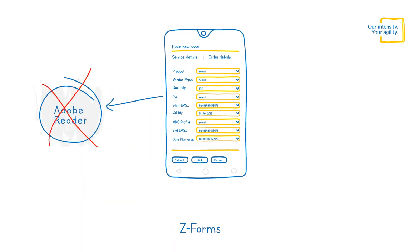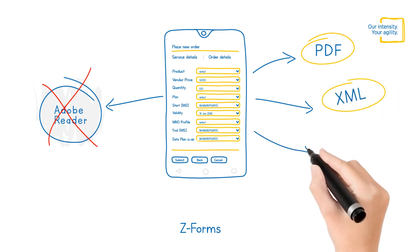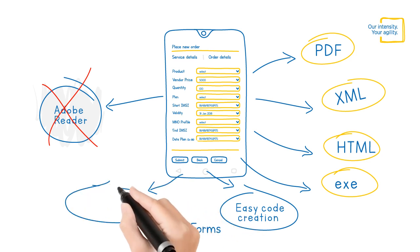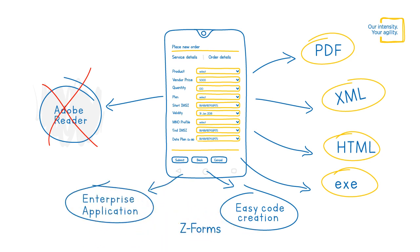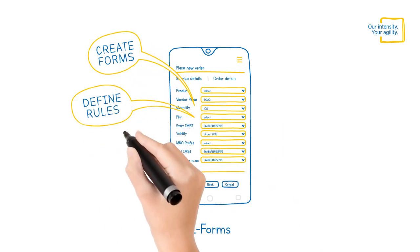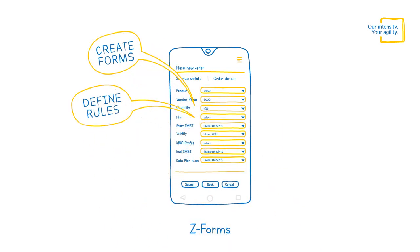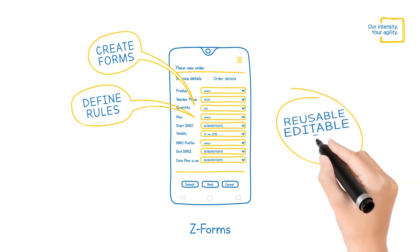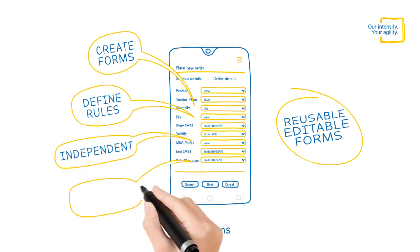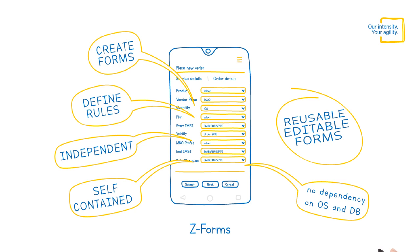No dependency on Adobe Reader. Generates multiple output formats like PDF, XML, and HTML. Generates code for creating and validating forms that can be integrated into any other enterprise application. Convenience of the mobile app for creating forms and defining rules. Forms once created can be reused and edited multiple times from within or outside the application. The forms are independent, self-contained forms without dependency on OS or DB.